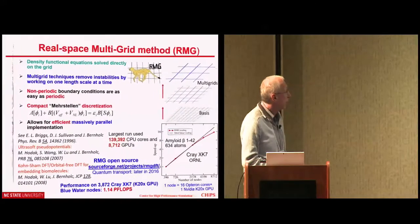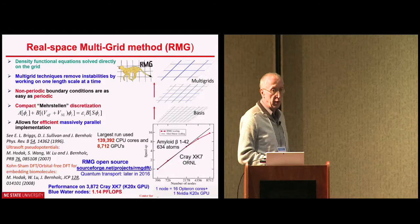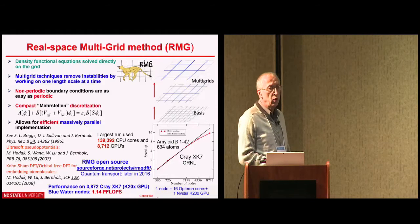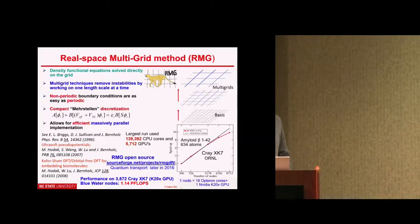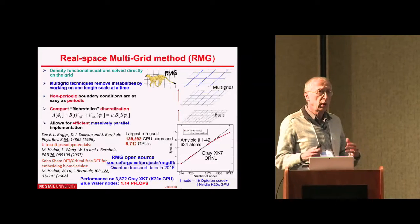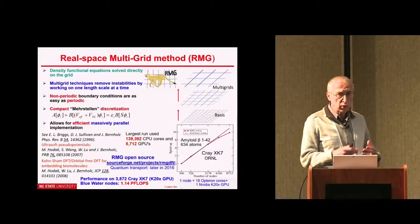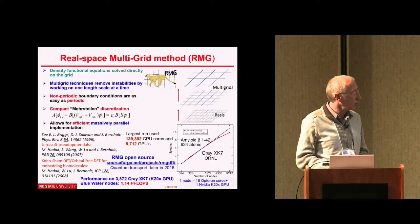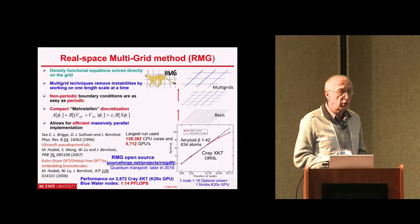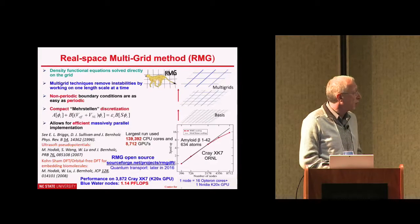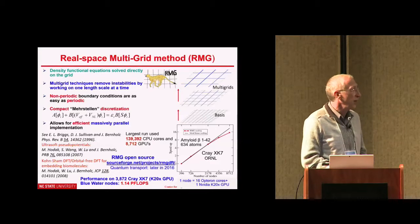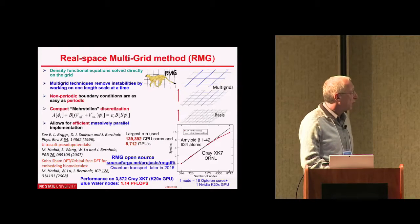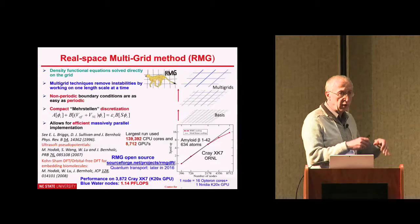Let me tell you about the real space multigrid method. Those of you who do density functional quantum calculations know that most of the world uses plane waves and pseudopotentials to solve those equations. We are still using pseudopotentials, but instead of plane waves, we are using grids. Plane waves and grids are duals to each other, but using grids has advantages — namely, we can use so-called multigrid methods to accelerate convergence.